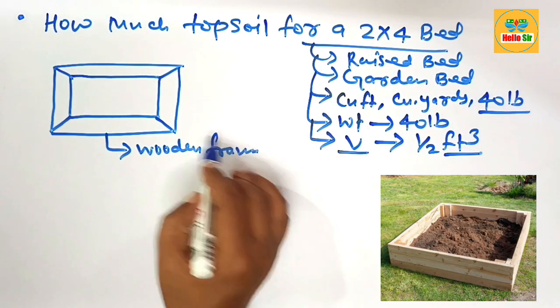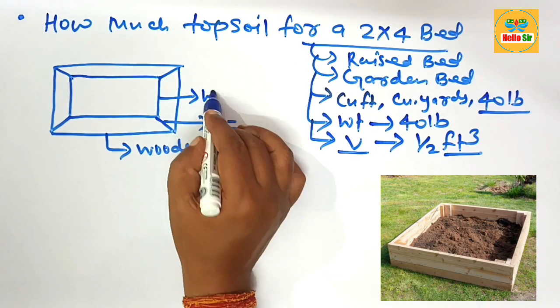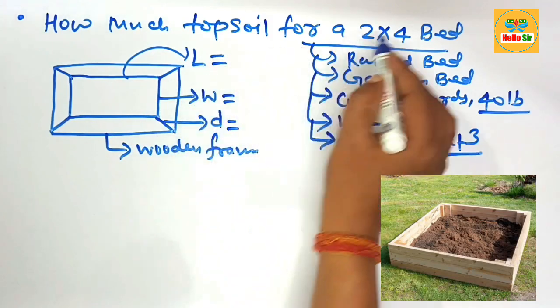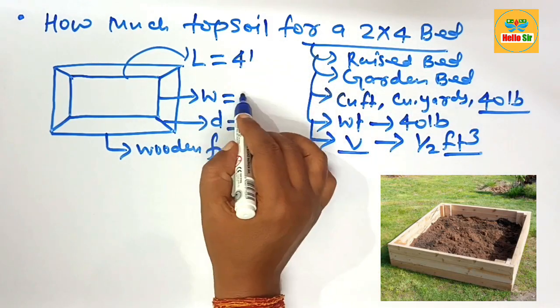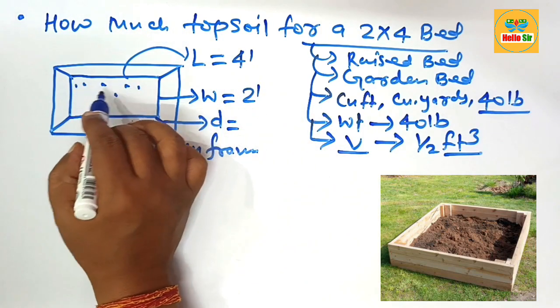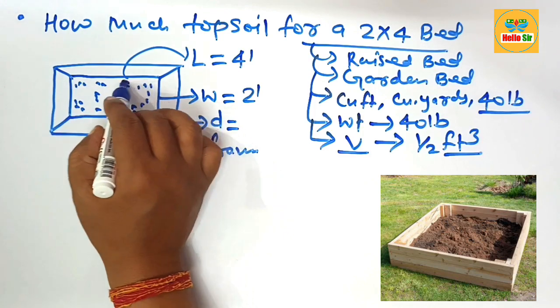And this one is the depth of soil, this one is the width, and this one is the length. The length is 4 feet, width is 2 feet, and this area is filled with topsoil material for growing plants.